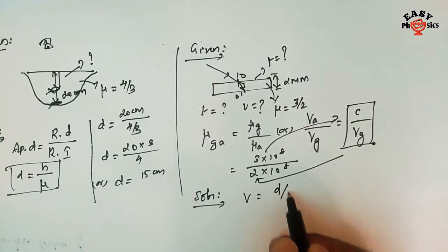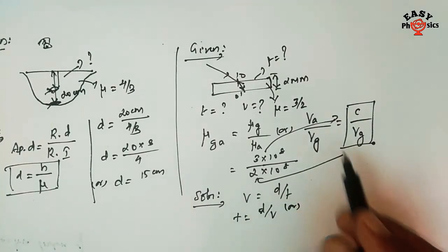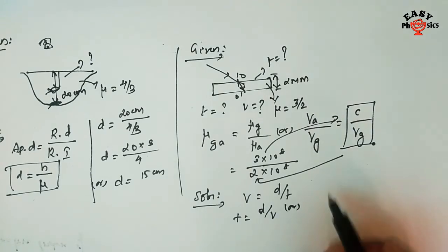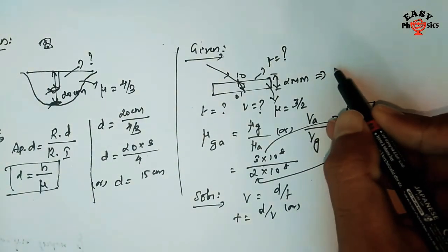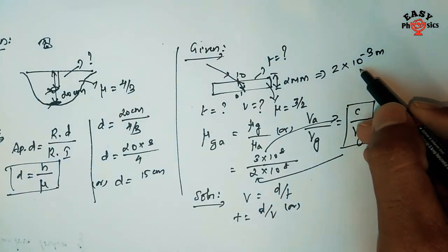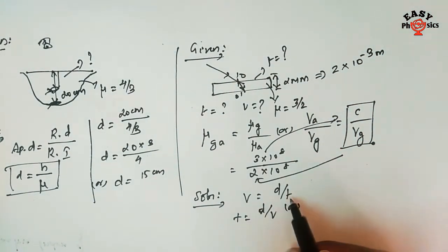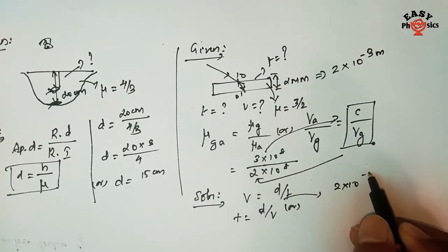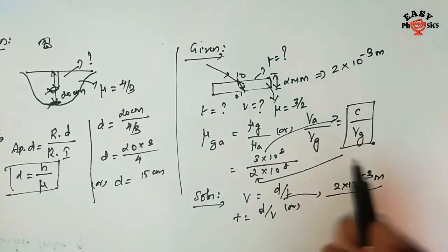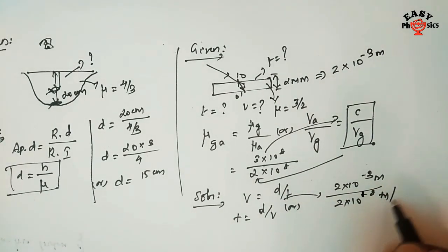Using velocity = distance divided by time, time equals distance divided by velocity. The distance is 2 mm = 2 × 10⁻³ m. Dividing by the velocity of light in glass, 2 × 10⁸ m/s, we get time t.